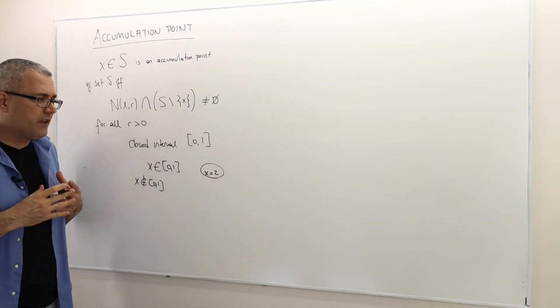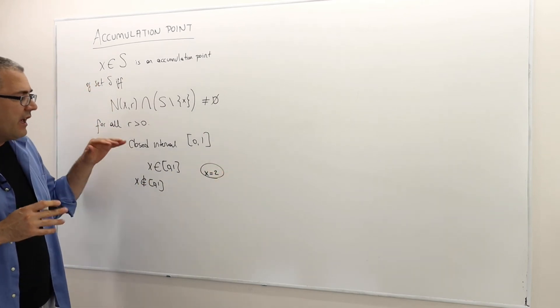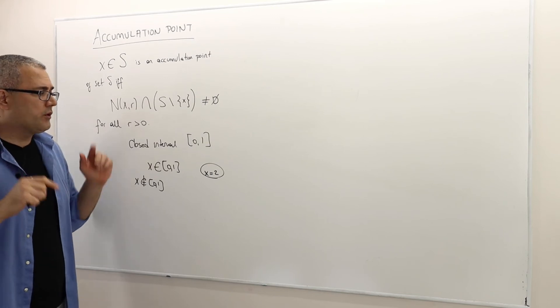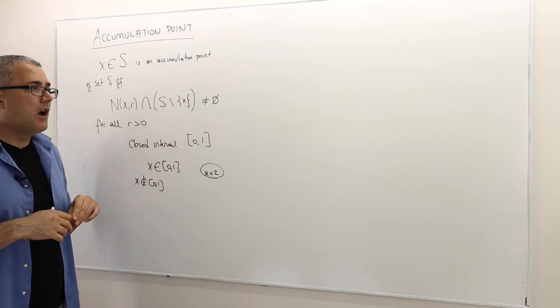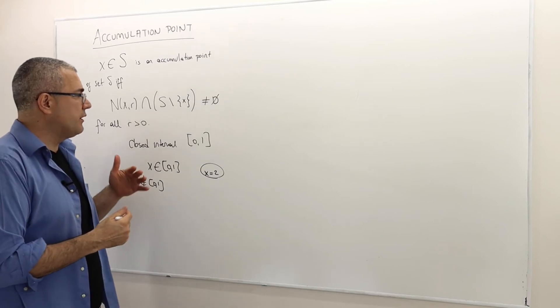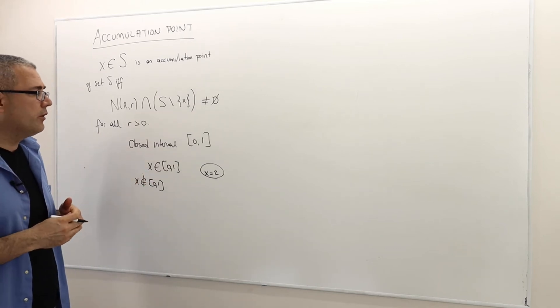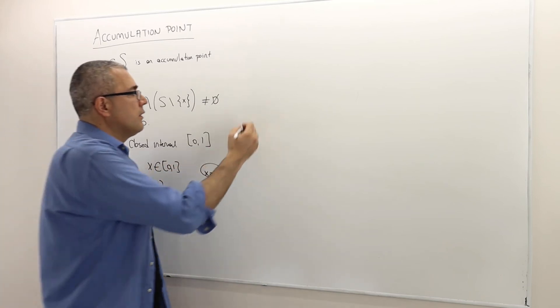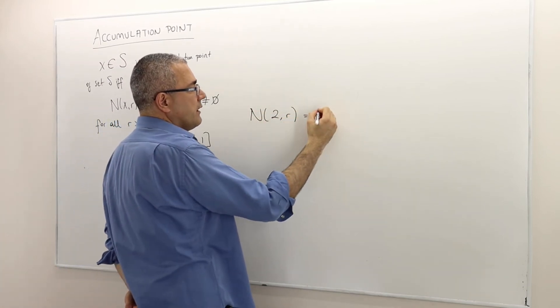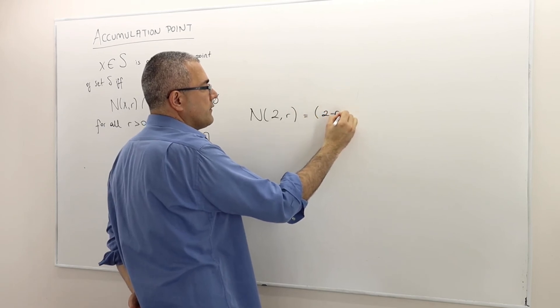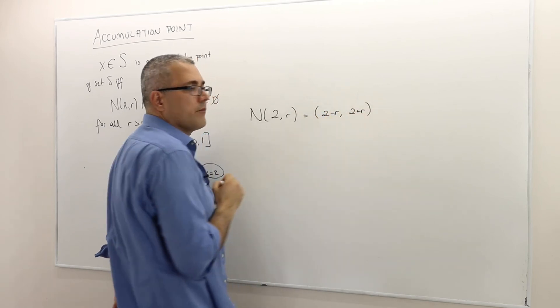The question is, can I say any neighborhood—that's important—any neighborhood of 2 will contain an element from S. Well, if the neighborhood is big enough, that's true. But if it is small enough, that's not true. So a neighborhood around 2, R, is basically an open interval (2 minus R, 2 plus R), right?